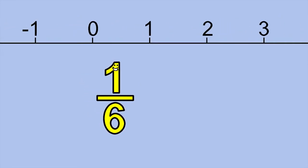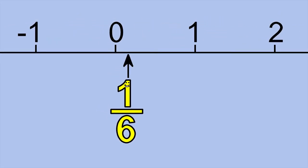You can find me on the number line between 0 and 1. If you divide the line segment between 0 and 1 into 6 equal-sized parts, I'm at the end of the first part.